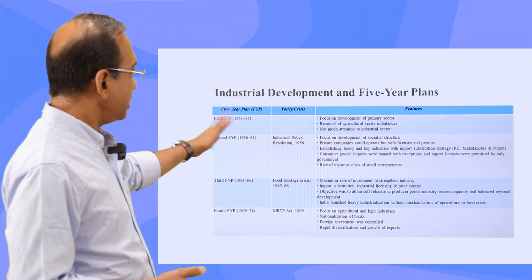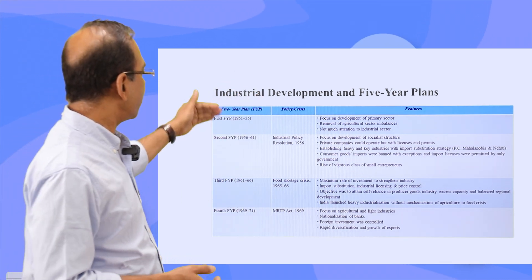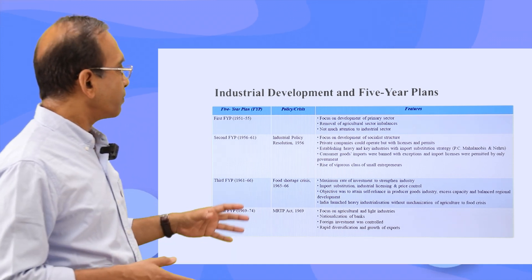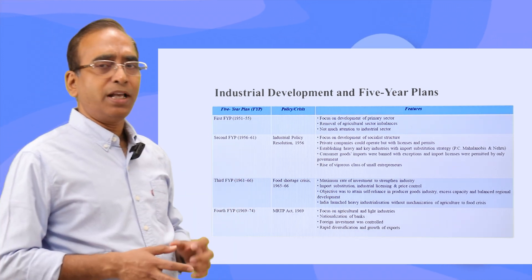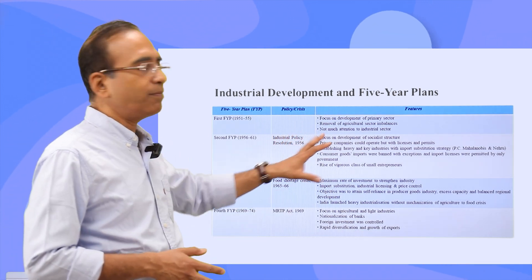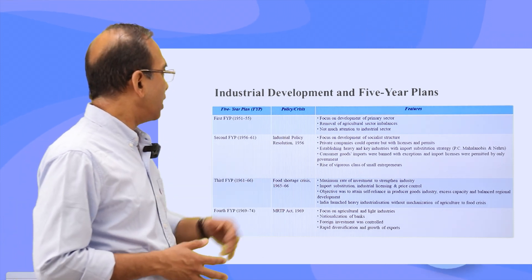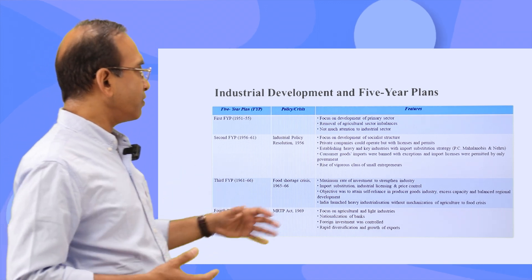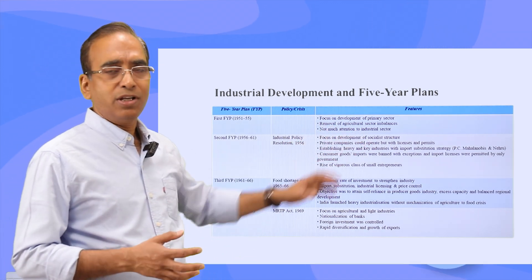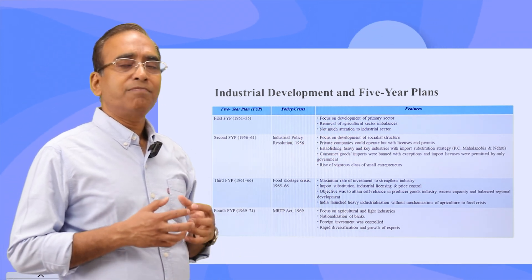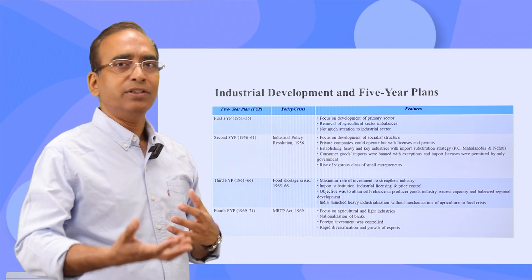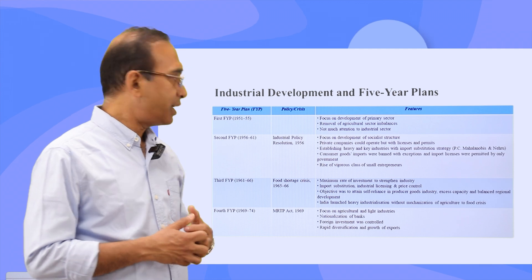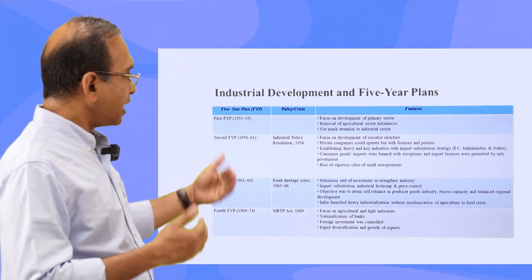In this slide and the next, we will talk about India's five-year plans and where India actually focused. From the industrialization point of view, the second five-year plan (1956–61) is very important. At that time, the major focus was on heavy industry. India decided to take a path of heavy industrialization, and during that time a lot of steel plants and other critical industries were actually set up.